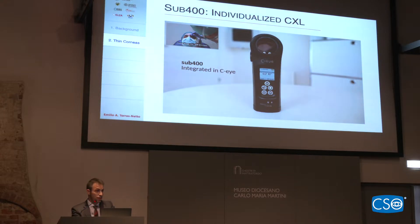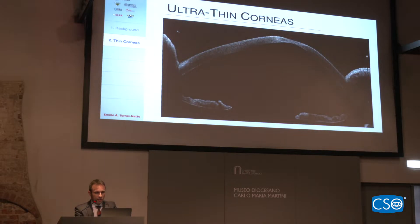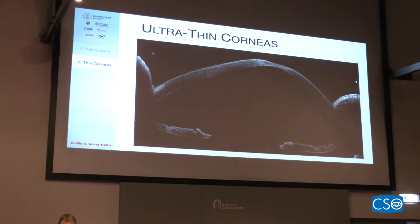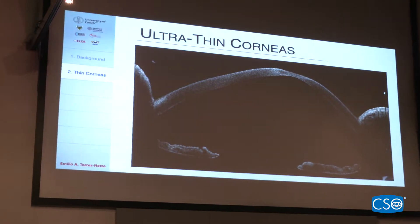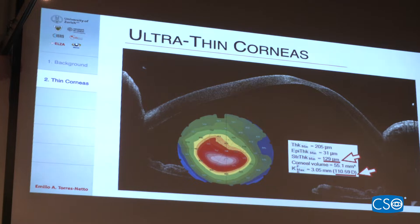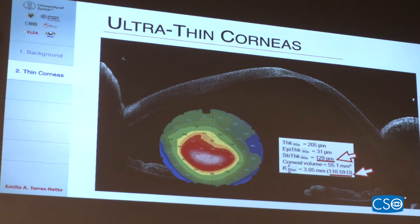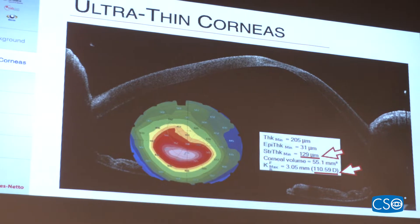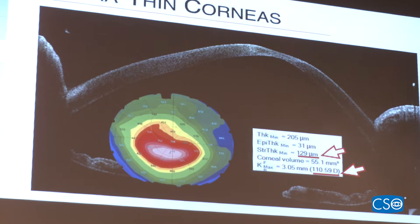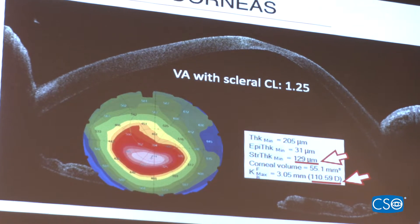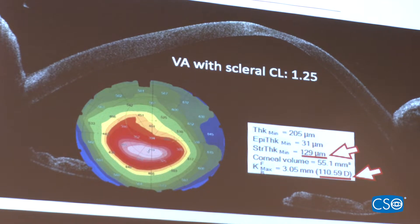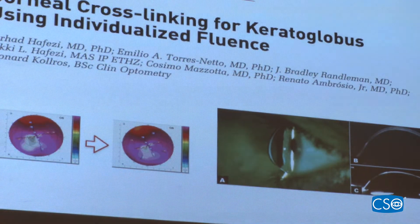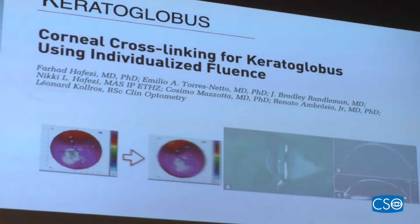Here is an MS-39 image of a very advanced cornea — previously a contraindication for cross-linking. The stromal thickness in this case was about 130 microns and the keratometry around 110 microns. Using the sub-400 protocol with the CI device and scleral lenses for rehabilitation, the patient achieved 20/20 vision or even 20/16. Treating thin corneas is possible, and a new indication — cross-linking for keratoglobus — can also be made.